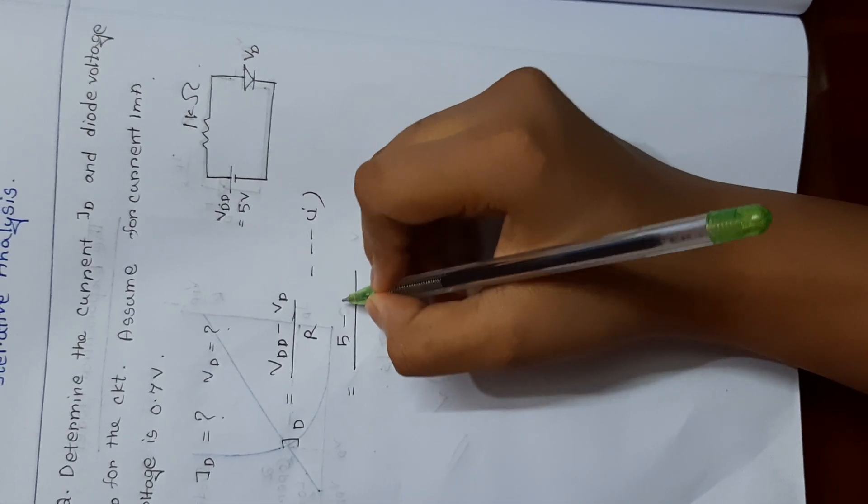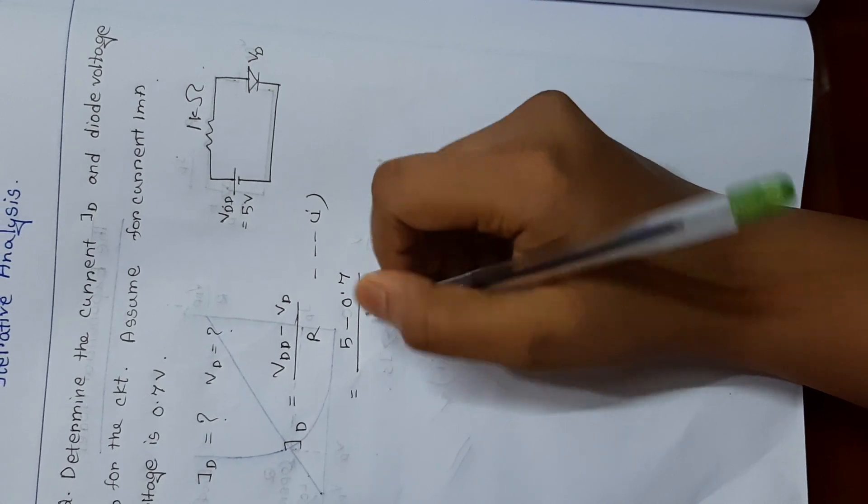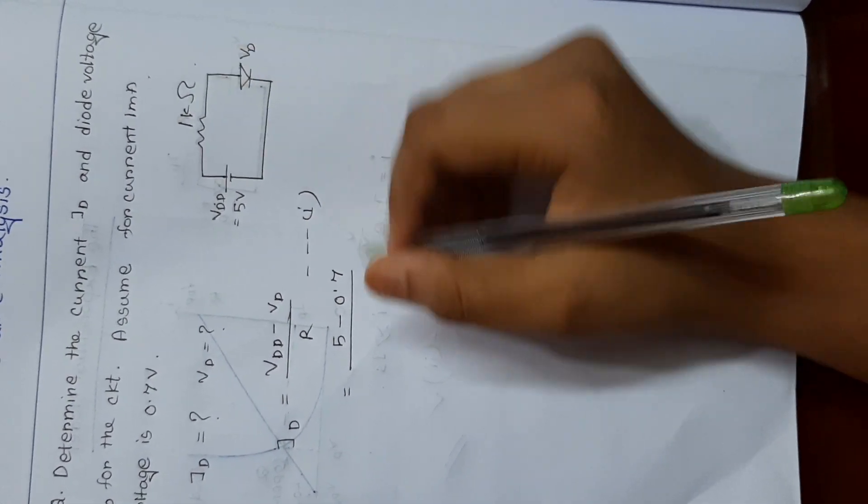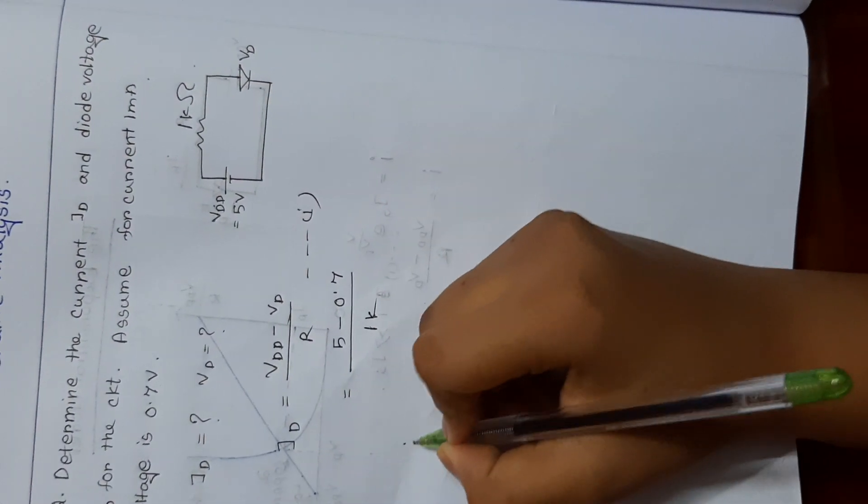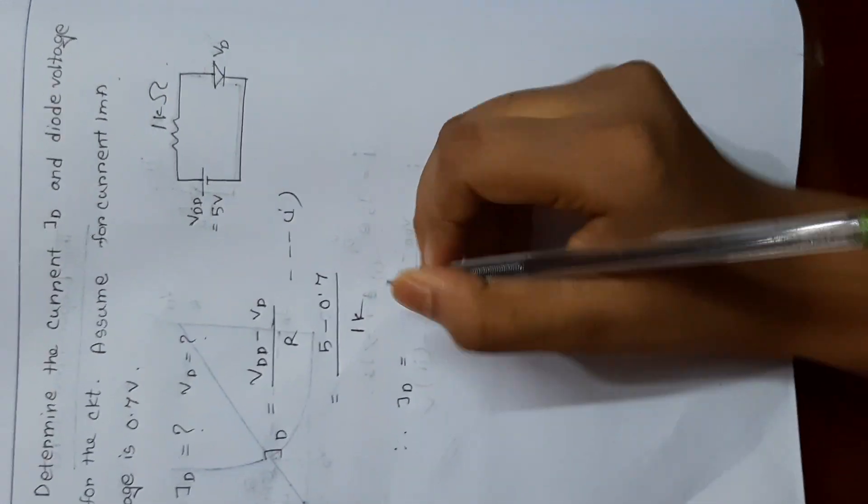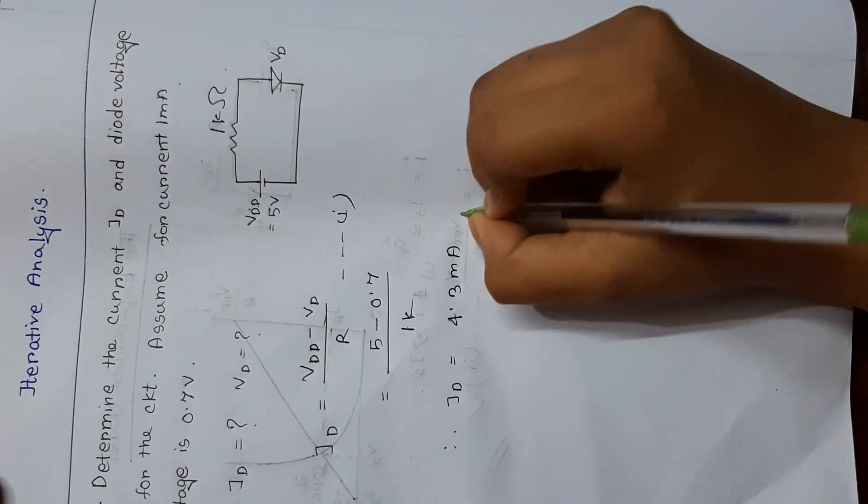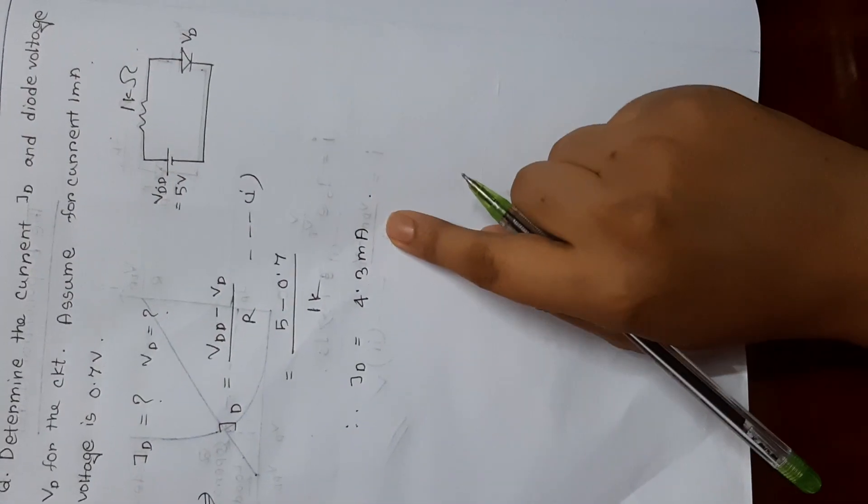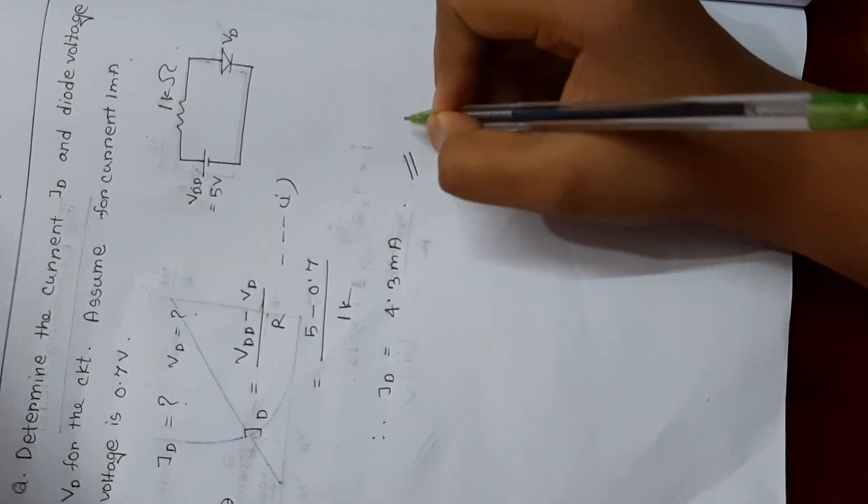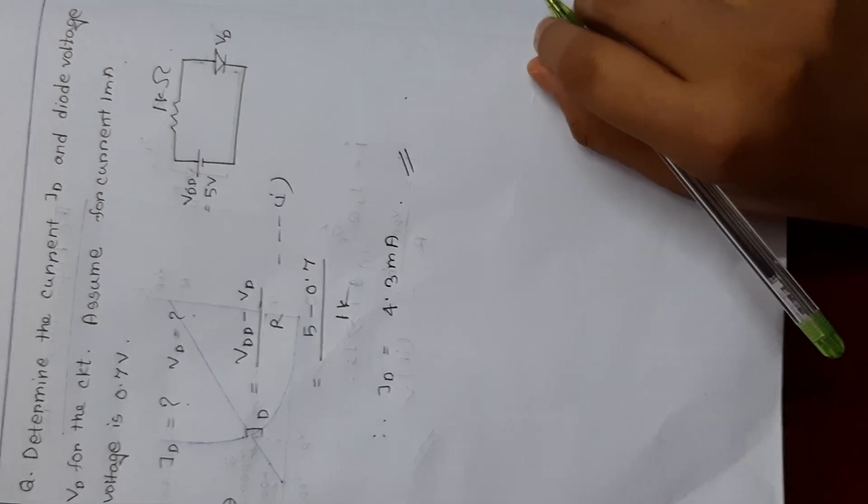So if we subtract it, 0.7, and the resistance is 1 kilo ohm, so Id is equal to 4.3 milliampere. So then we will move to the next part. This is part 1, then we will have to move to the next part.